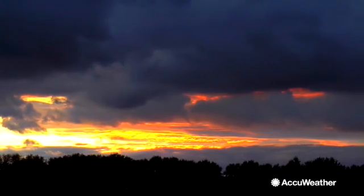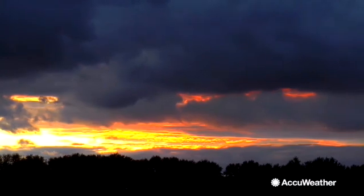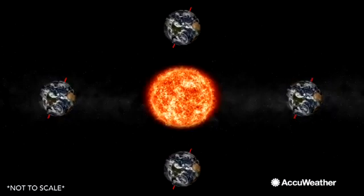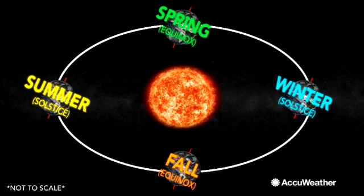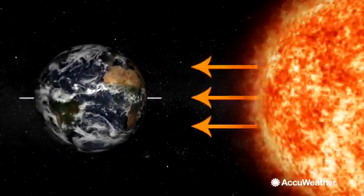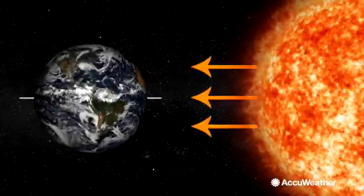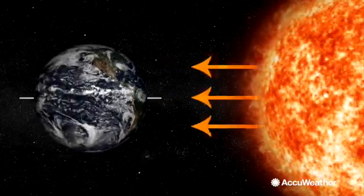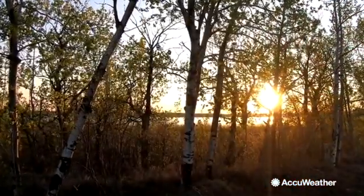Seasons change because of Earth's tilt on its axis. Depending on its orbit around the sun, the angle of sunlight changes. During the equinox, sunlight is distributed almost equally across both hemispheres.